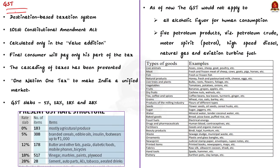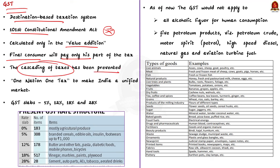GST is important for both prelims and mains. It is a destination-based taxation system established by the 101st Constitutional Amendment Act. It is calculated only on the value addition at any stage of goods or services. The final consumer pays only their part of the tax, preventing the cascading effect of taxes. It is an indirect tax for the whole country on the lines of one nation, one tax, to make India a unified market. GST is levied at different rates: 5%, 12%, 18%, and 28%. The number of items within the 18% tax slab remains the highest within GST goods.